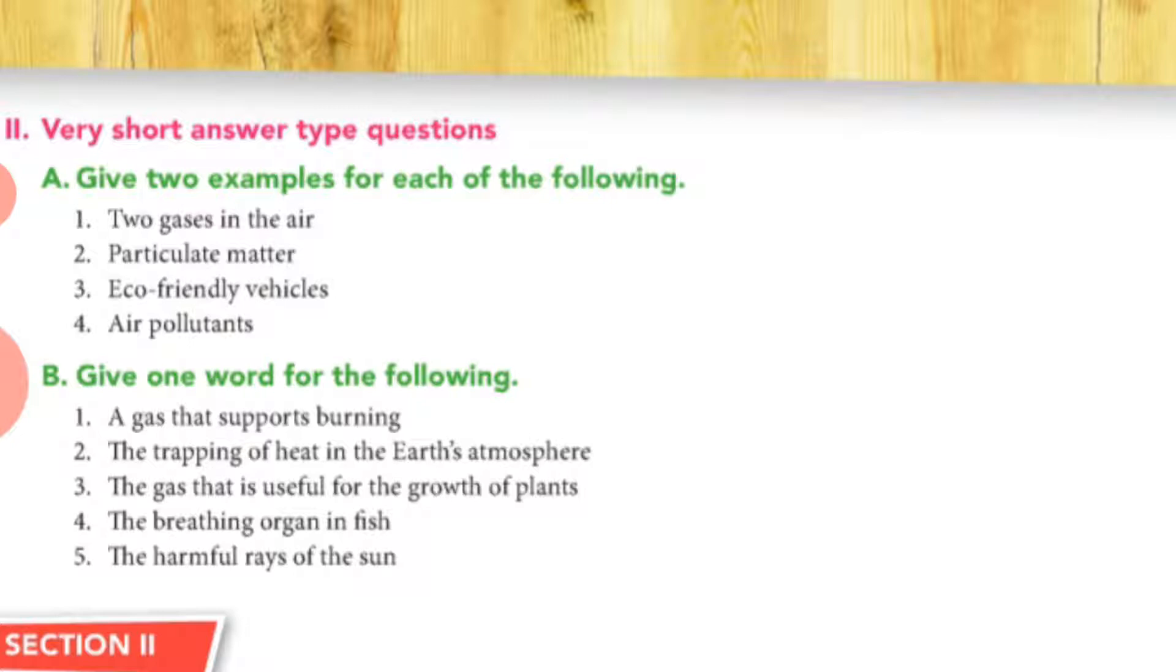Third one, the gas that is useful for the growth of plants, it is nitrogen. Fourth, the breathing organ in fish, it is gills. Fifth, the harmful rays of the sun, it is ultraviolet rays.